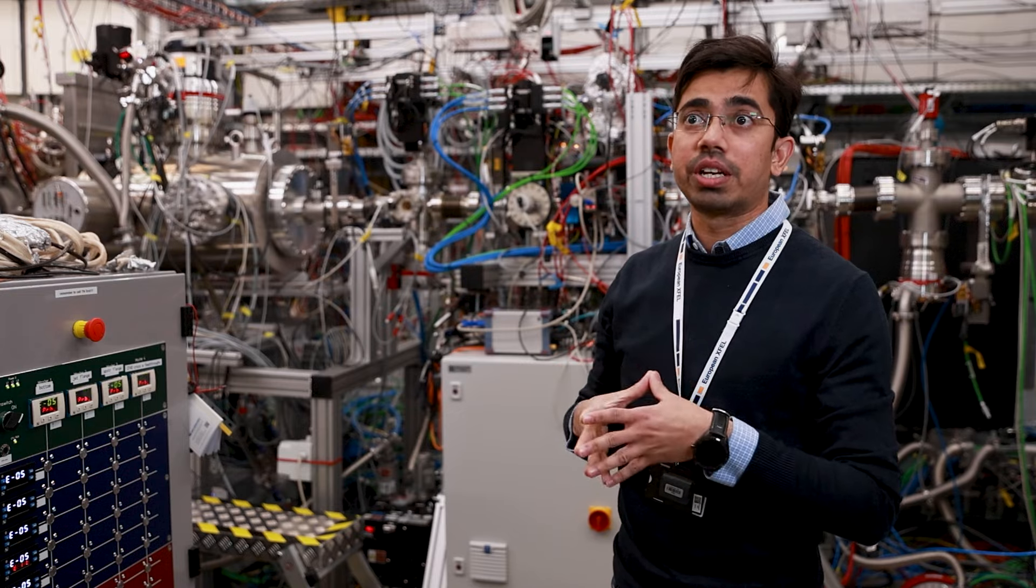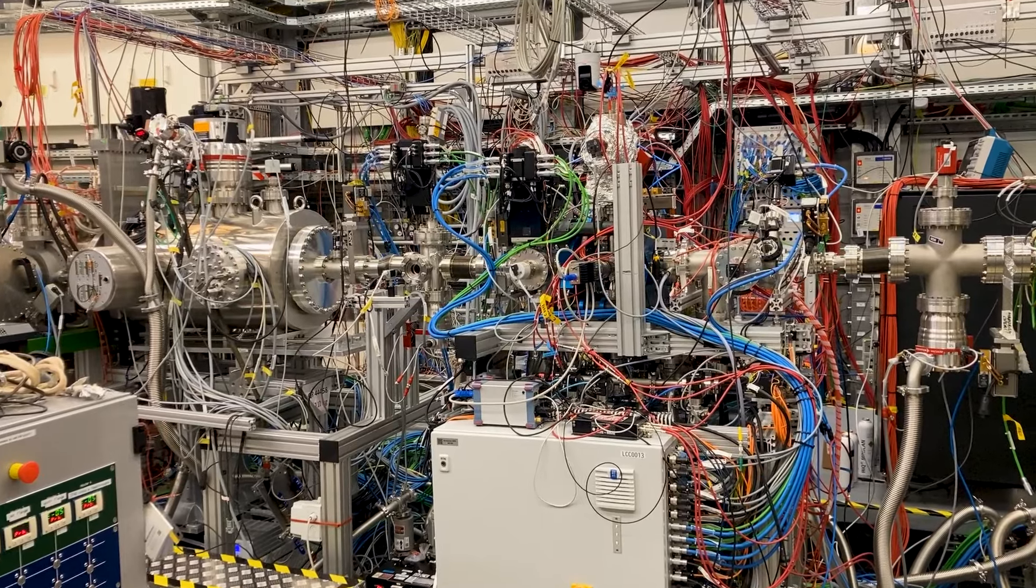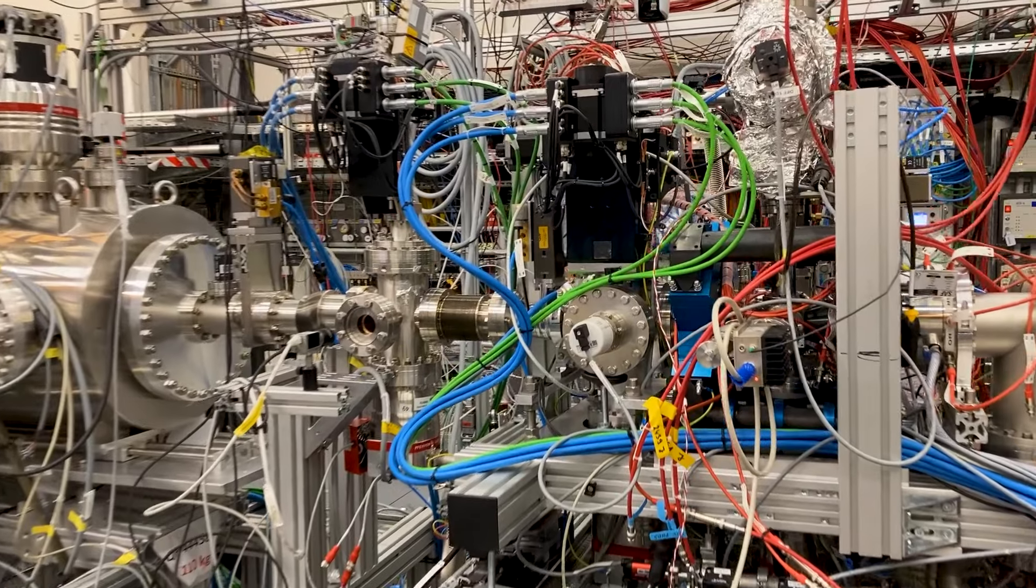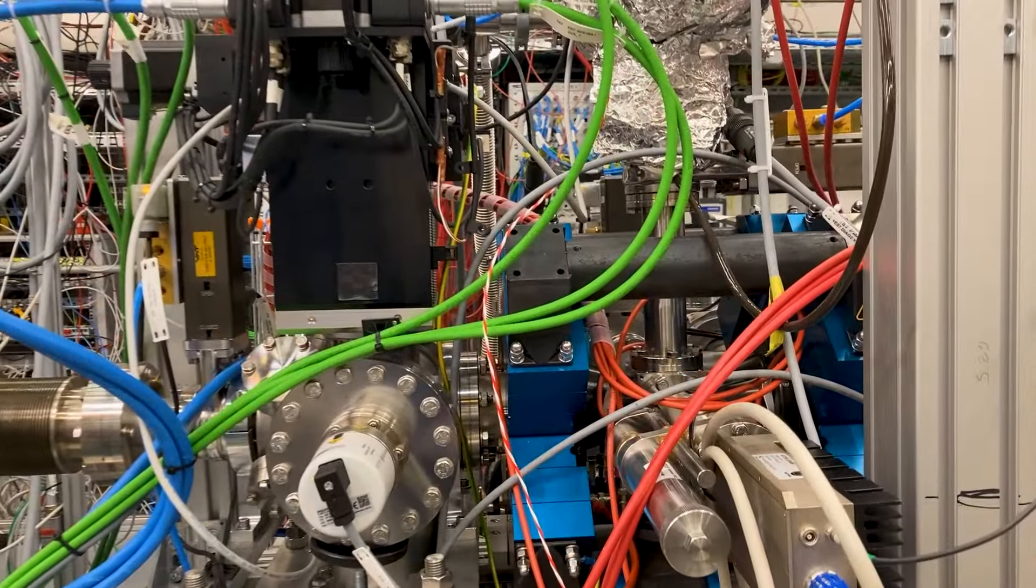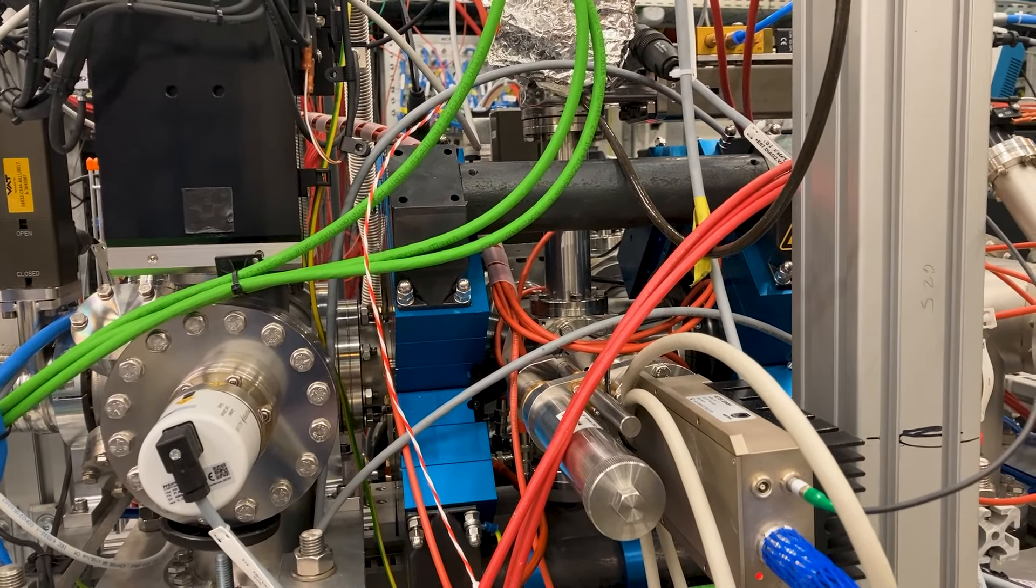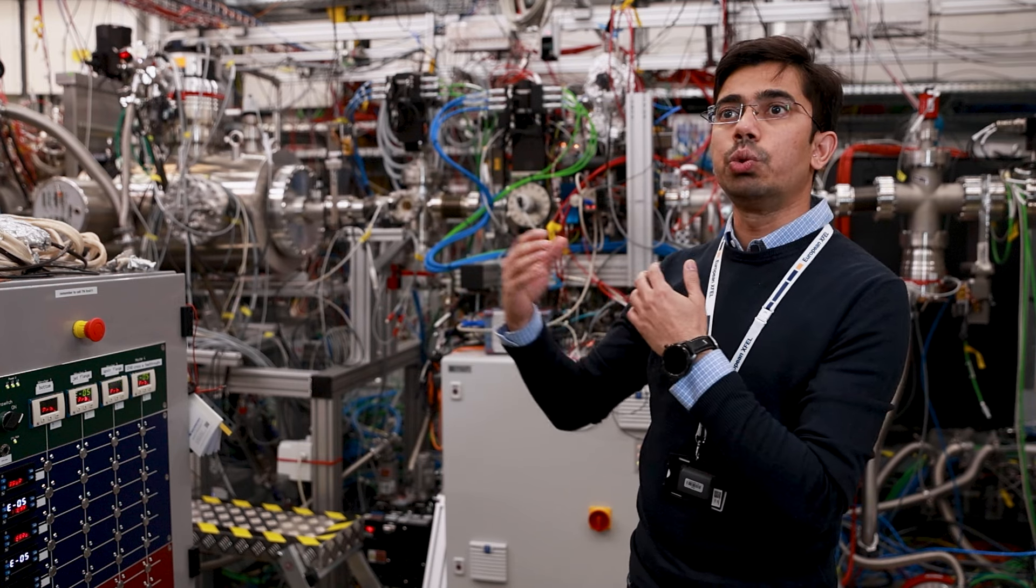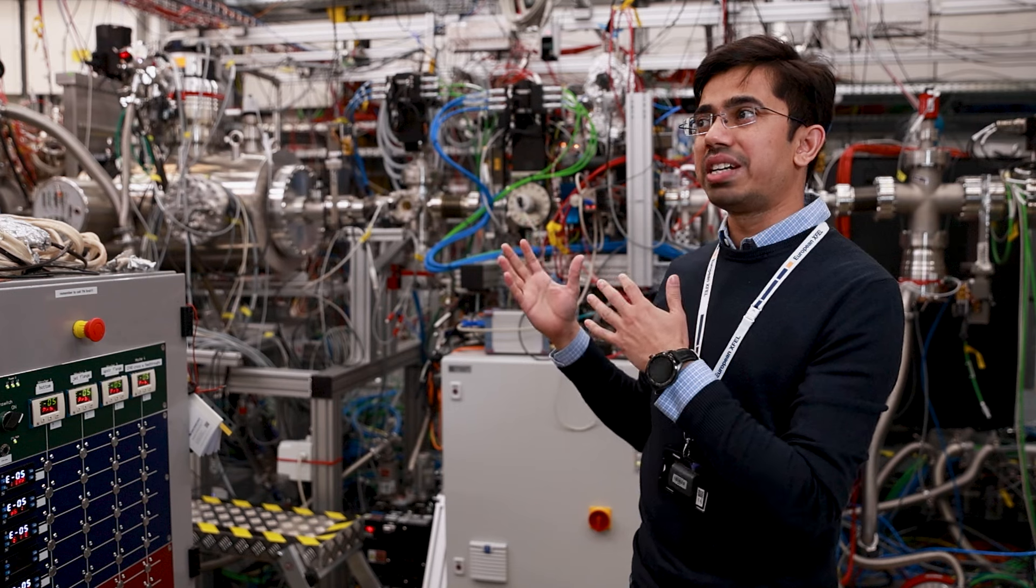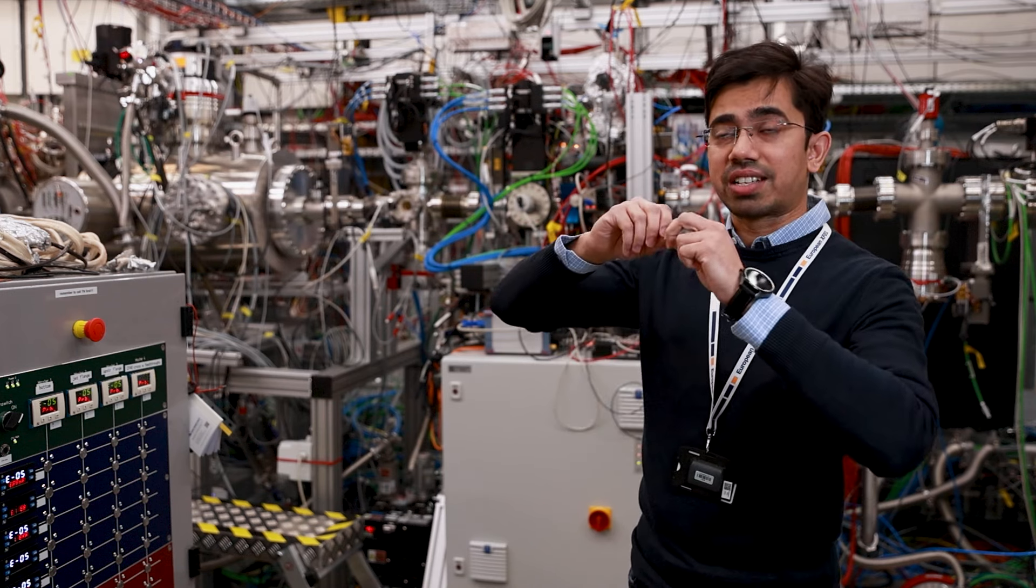The SQS instrument at European XFEL provides us a unique capability to precisely measure the lifetime of electronic transitions. This particular instrument has a unique capability of generating two colors, basically two X-ray pulses with some delay in between. Our measurement scheme is very simple: we use the first color to excite a transition from the ground state to the excited state.